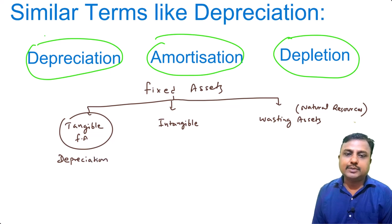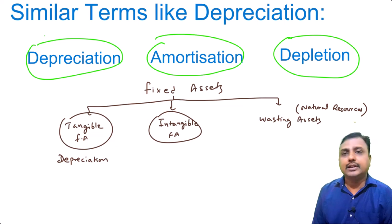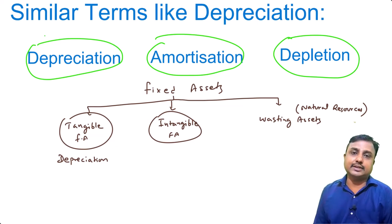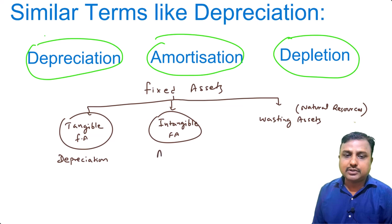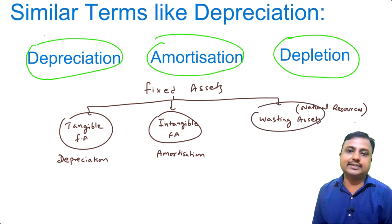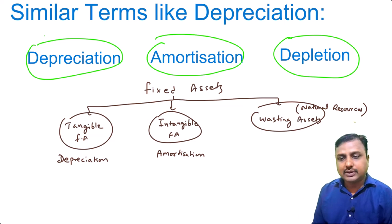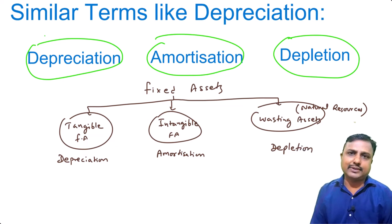For intangible fixed assets like goodwill, copyright, patent, and trademark, their values are also reduced over time. When it comes to reducing the value of intangible assets, we use the word amortization. And for wasting fixed assets — natural resources — as you extract the natural resources, the value also reduces, so we use the word depletion. These are the basic differences between depreciation, amortization, and depletion.